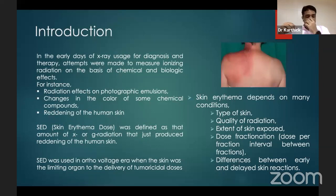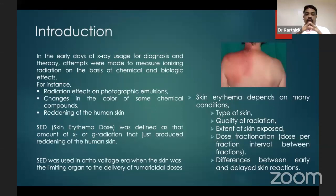Skin erythema was used in the orthovoltage era mainly because when you have skin erythema, you cannot continue treating the patient. So skin erythema was a limiting organ for delivering more tumour dose. This is a very crude way of measuring the dose and not a good factor to measure radiation dose at all.